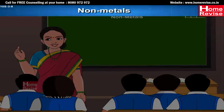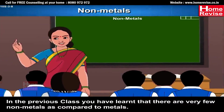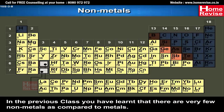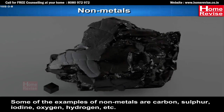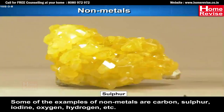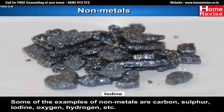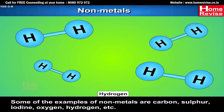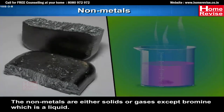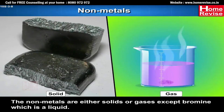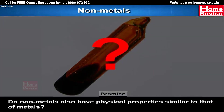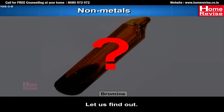Non-metals: In the previous class, you have learnt that there are very few non-metals compared to metals. Some examples of non-metals are carbon, sulfur, iodine, oxygen, hydrogen, etc. Non-metals are either solids or gases, except bromine which is a liquid. Do non-metals also have physical properties similar to those of metals? Let us find out.